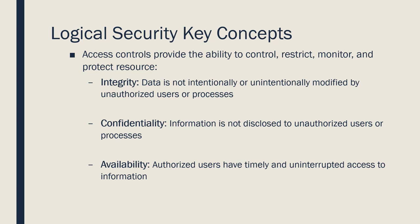These three concepts are referred to as the CIA triad and they are the foundation of security controls and policies. Integrity refers to the protection of data so that it is not intentionally or unintentionally modified in order for it to remain reliable. For example, you want to make sure that financial data about a company remains reliable by protecting it from unauthorized access. Access controls related to integrity prevent modification of data by unauthorized users, prevent unauthorized or unintentional modification of data by authorized users, and preserve internal and external consistency of data.